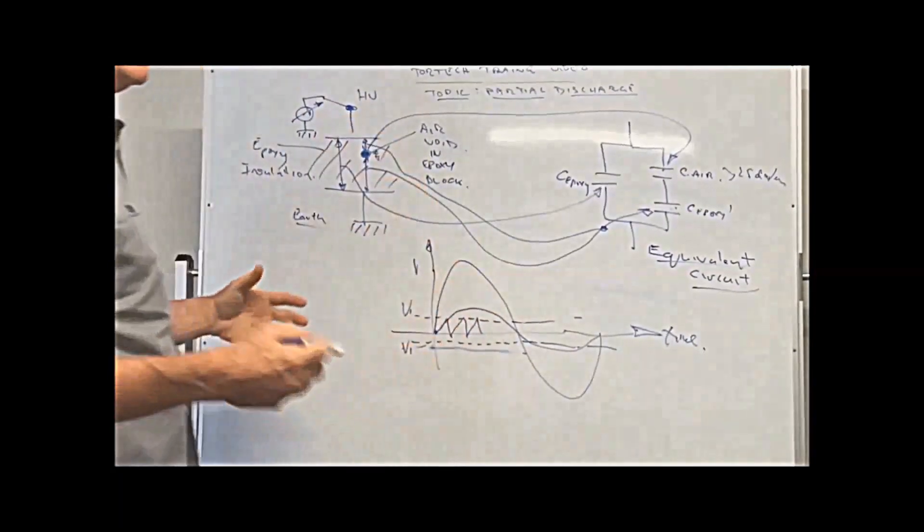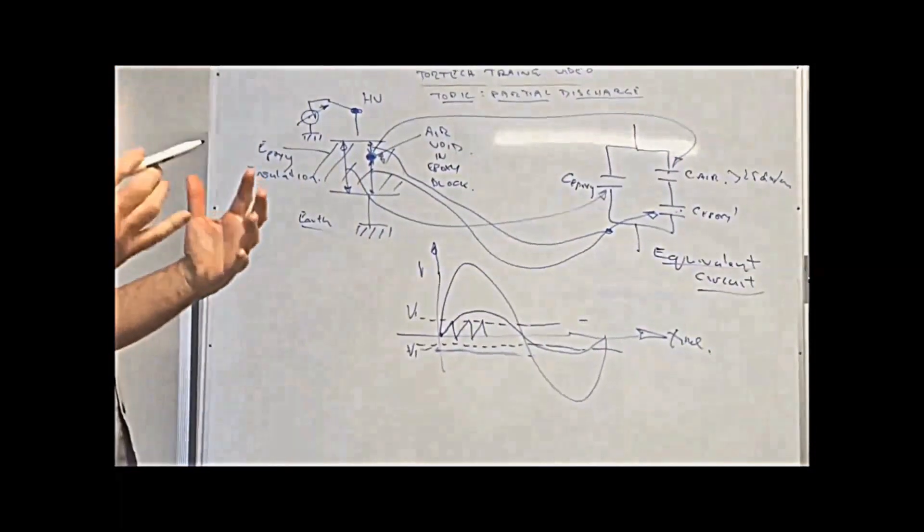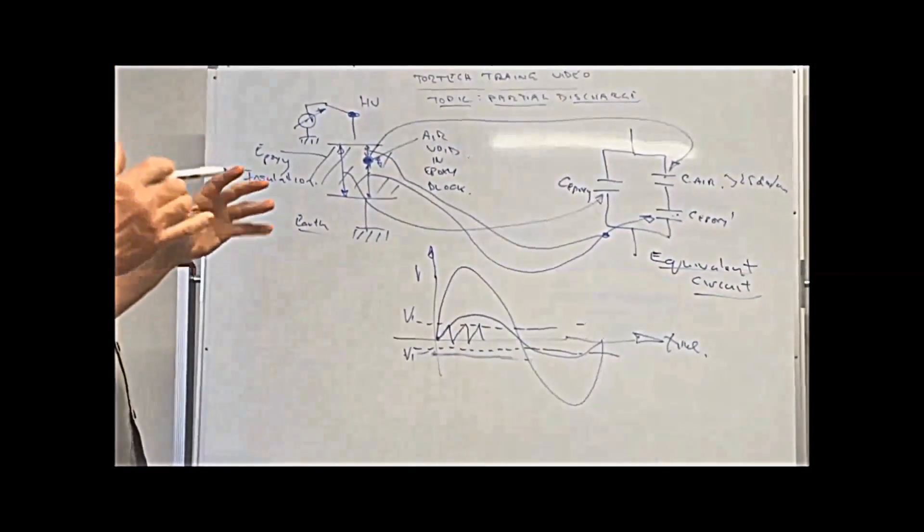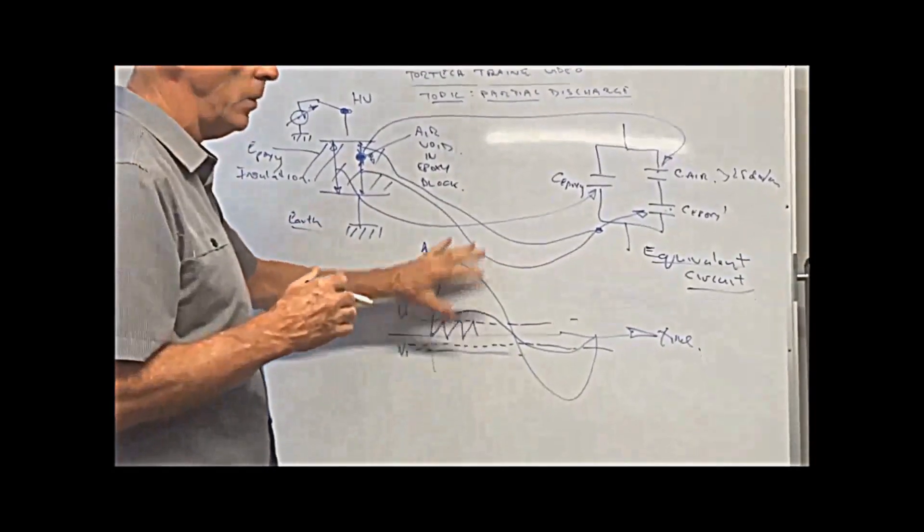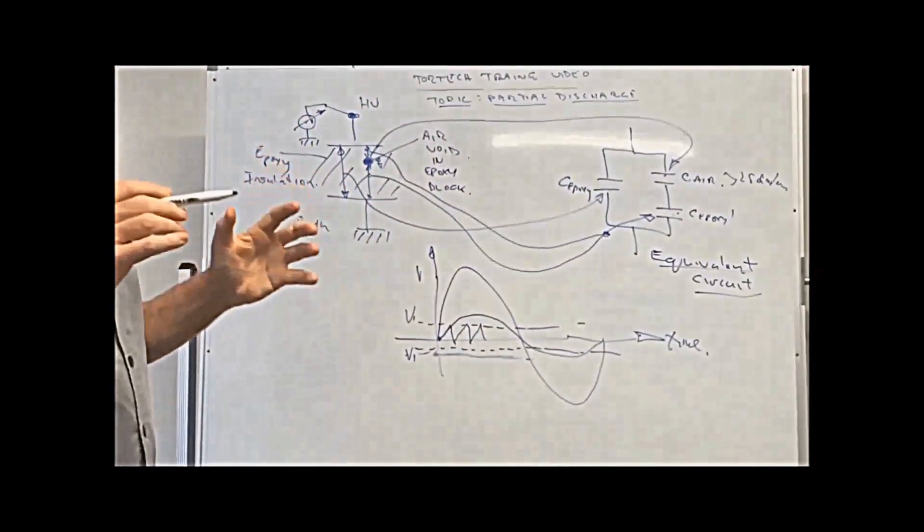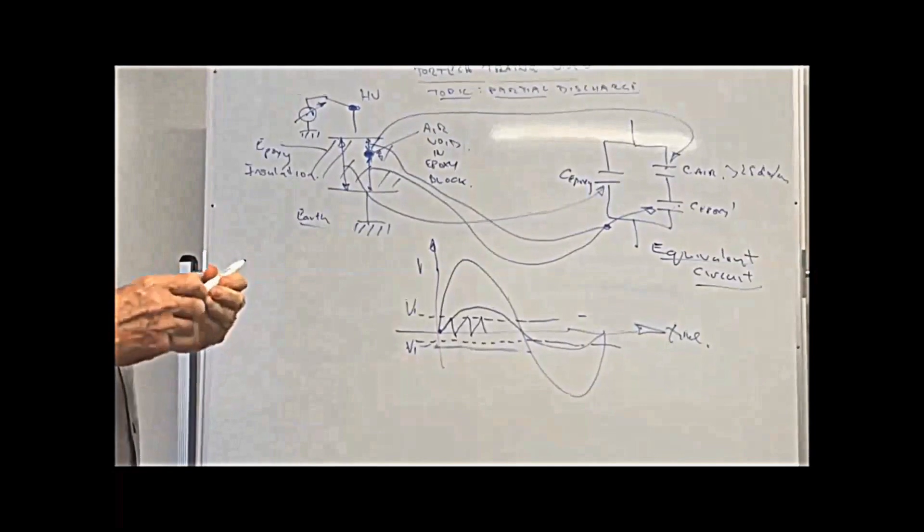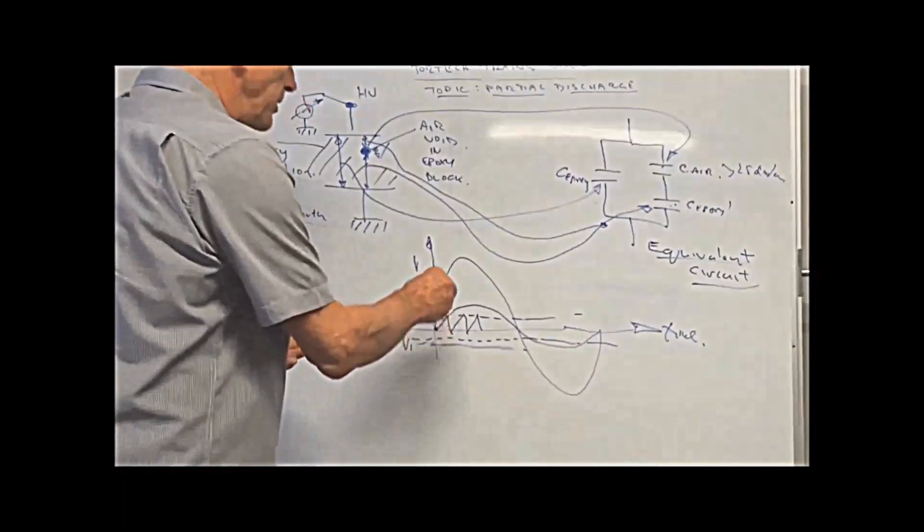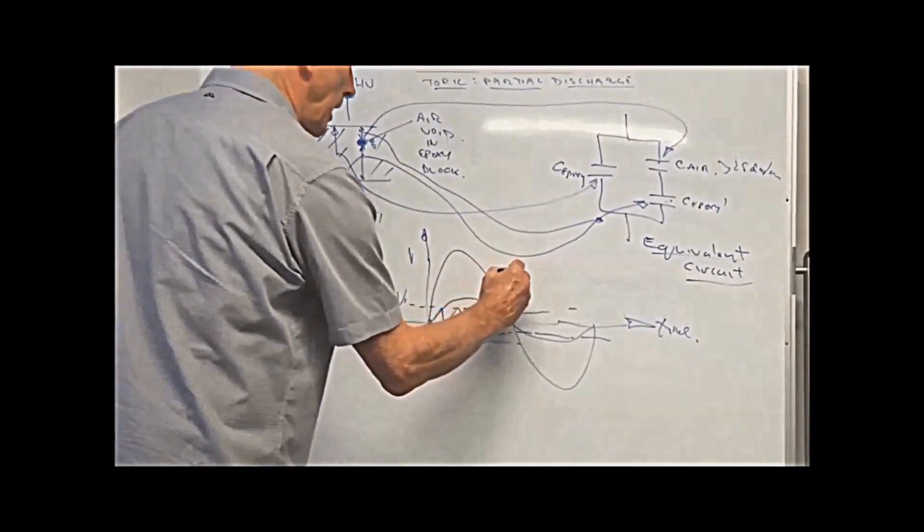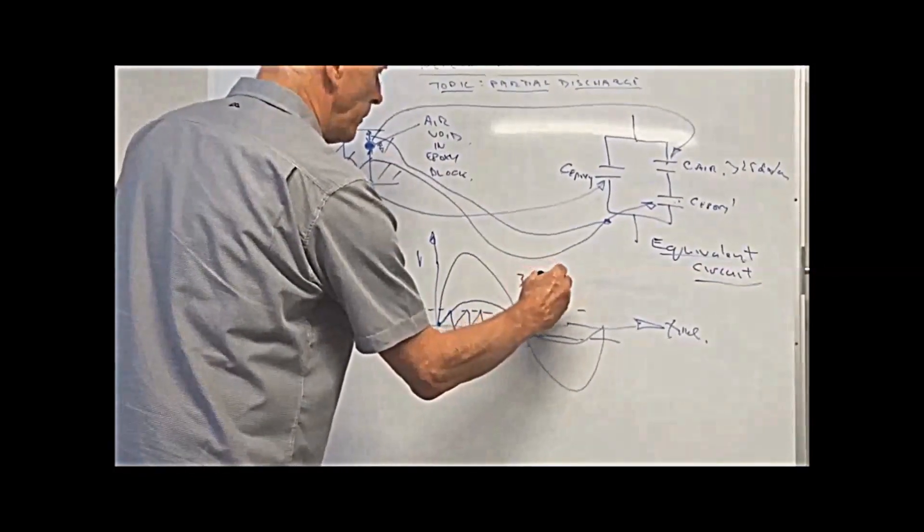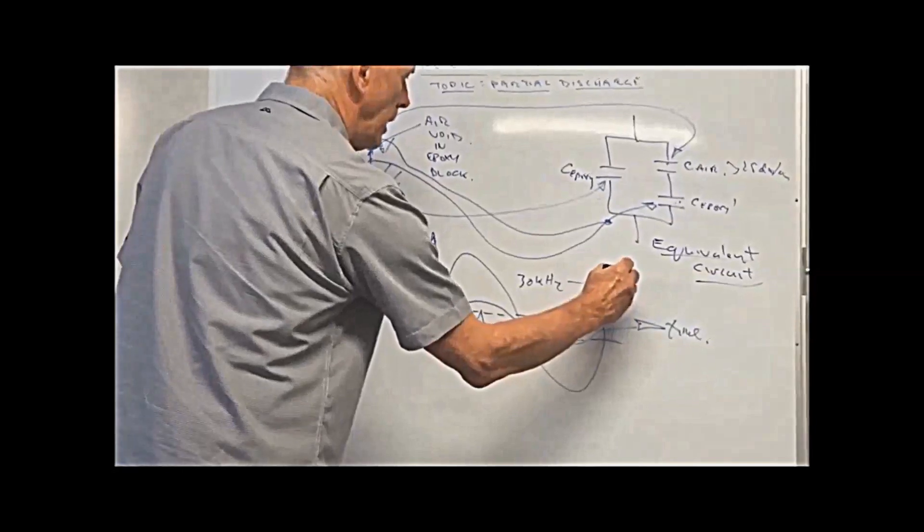And this is the discharge, the partial discharge that we're seeing in the insulation block. And that's exactly what you see when you're measuring with a partial discharge detector. The voltage builds up, collapses, but it's happening at high frequency. It might be happening at 30 kilohertz up to maybe 100 kilohertz.